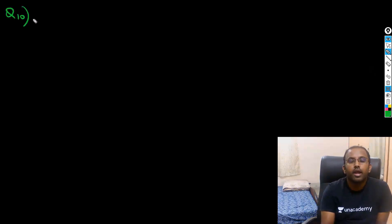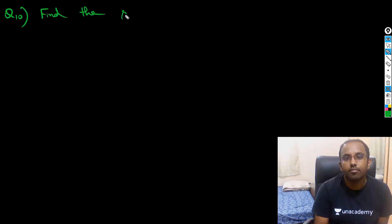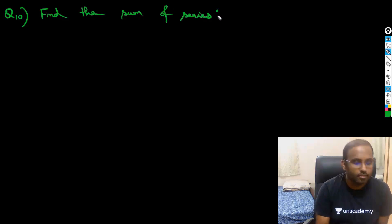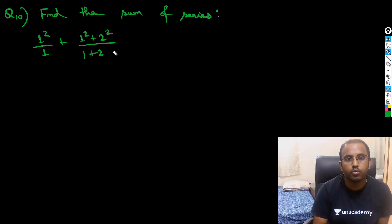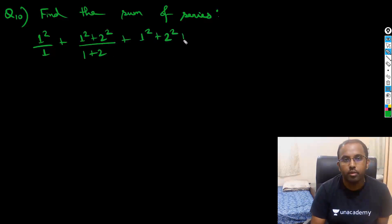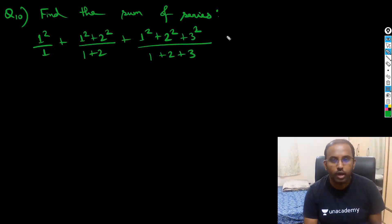Let's move to question number 10. In this question, we have to find the sum of a series: 1² / 1 + 1² + 2² / (1+2) + 1² + 2² + 3² / (1+2+3), and this will continue up to 42 terms.